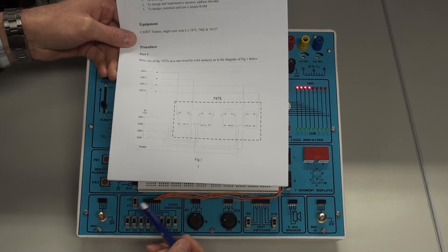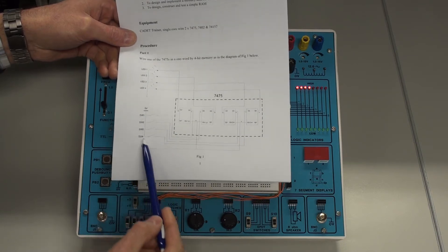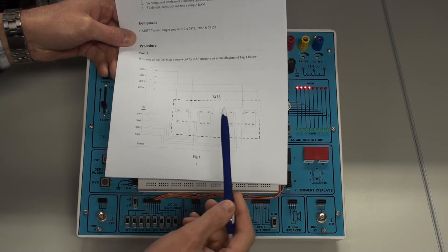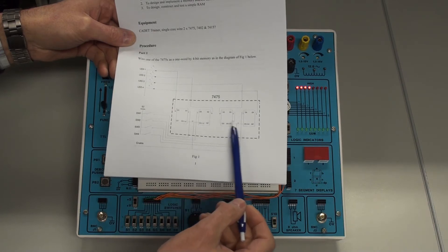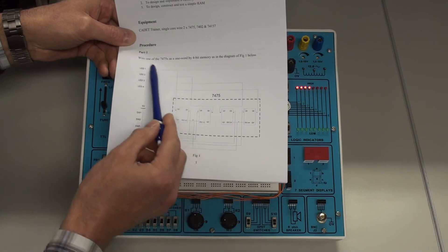So what we're going to do is basically write with these switches here a 4-bit word, a 4-bit binary word to the memory latch. And then we're going to read that information on the LEDs here.